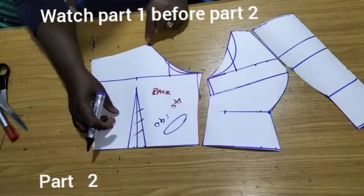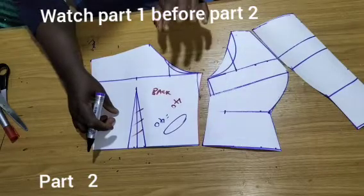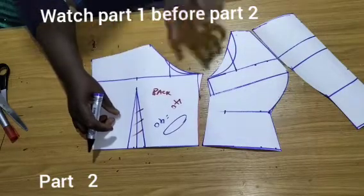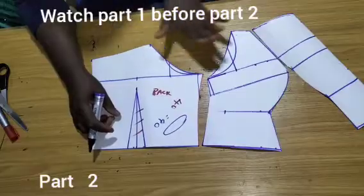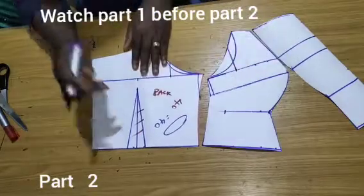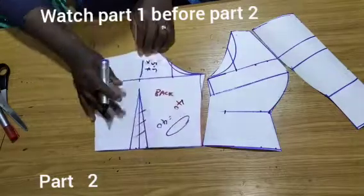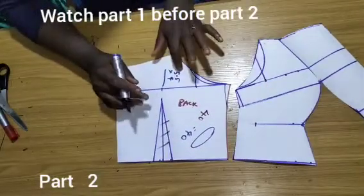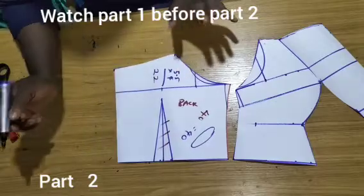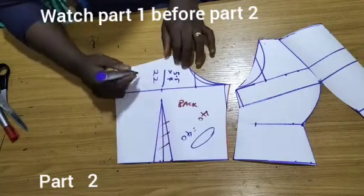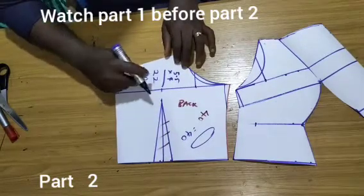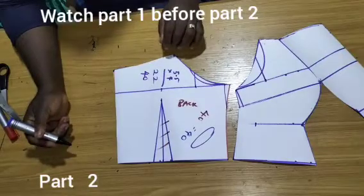Remember we took away 1.5 from our shoulder, that is 5.5. So this 5.5 is on a quarter. So we are going to do 5.5 times 4, that will make it a full body. So 5.5 times 4 will give us 22.